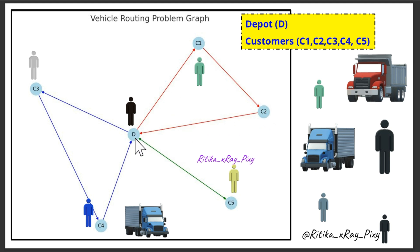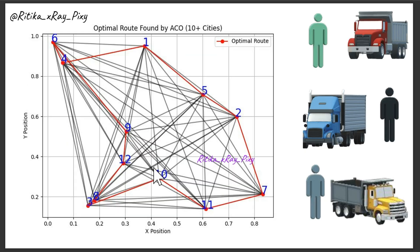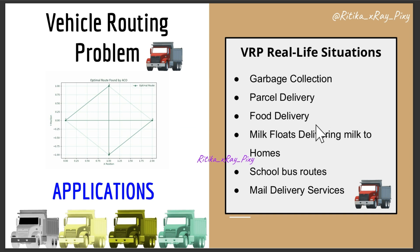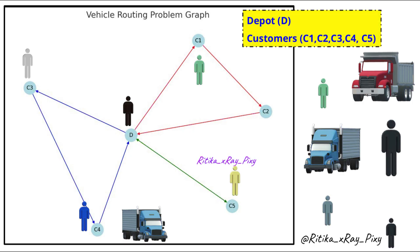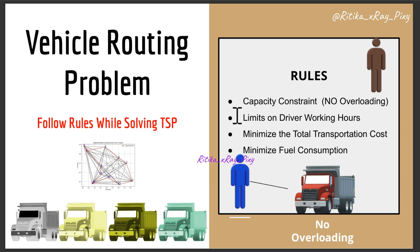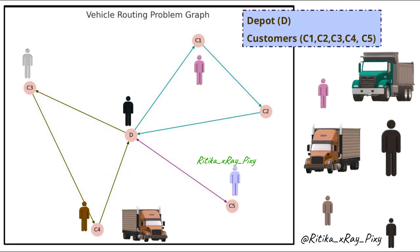In simple terms, VRP is about planning the best way to deliver items from a central location to different customers using a fleet of vehicles. This problem appears in many real-world situations like garbage collection, parcel delivery, milk float delivery, school bus routes, and more. To solve VRP, we must ensure all customers are served on time, follow rules like vehicle capacity limits and driver working hour limits, and achieve the objective of minimizing total transportation cost.